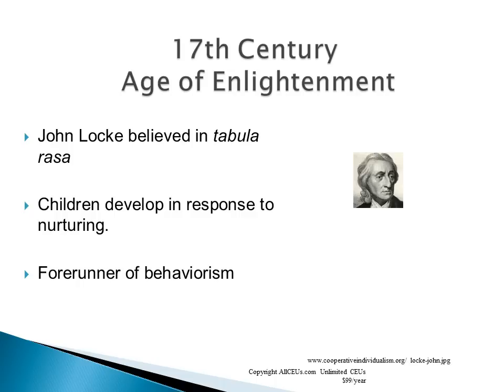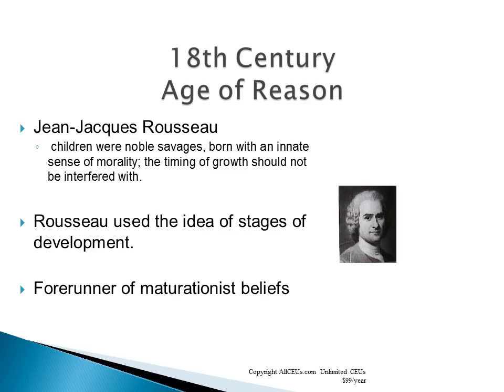In the 17th century, the Age of Enlightenment believed that children were born as clean slates — the tabula rasa theory — and developed in response to nurturing. John Locke proposed the forerunner to behaviorism. In the 18th century, Jean-Jacques Rousseau believed that children were noble savages, born with an innate sense of morality, and that the timing of growth should not be interfered with. He used the ideas of stages of development and postulated the forerunners to maturationist beliefs.